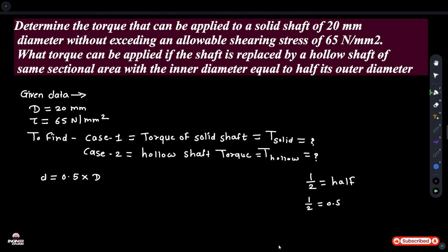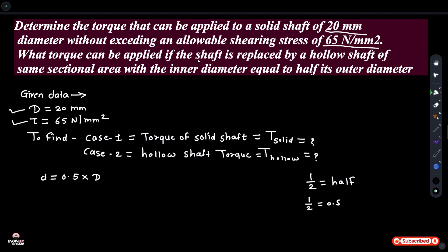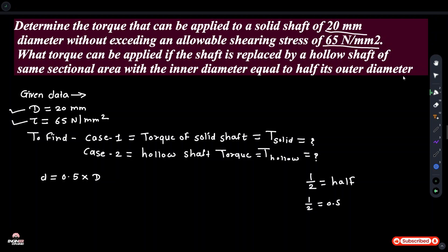Determine the torque that can be applied to a solid shaft of 20 mm diameter without exceeding an allowable shearing stress of 65 newton per mm square. What torque can be applied if the shaft is replaced by a hollow shaft of the same sectional area, with inner diameter equal to 0.5 times its outer diameter?